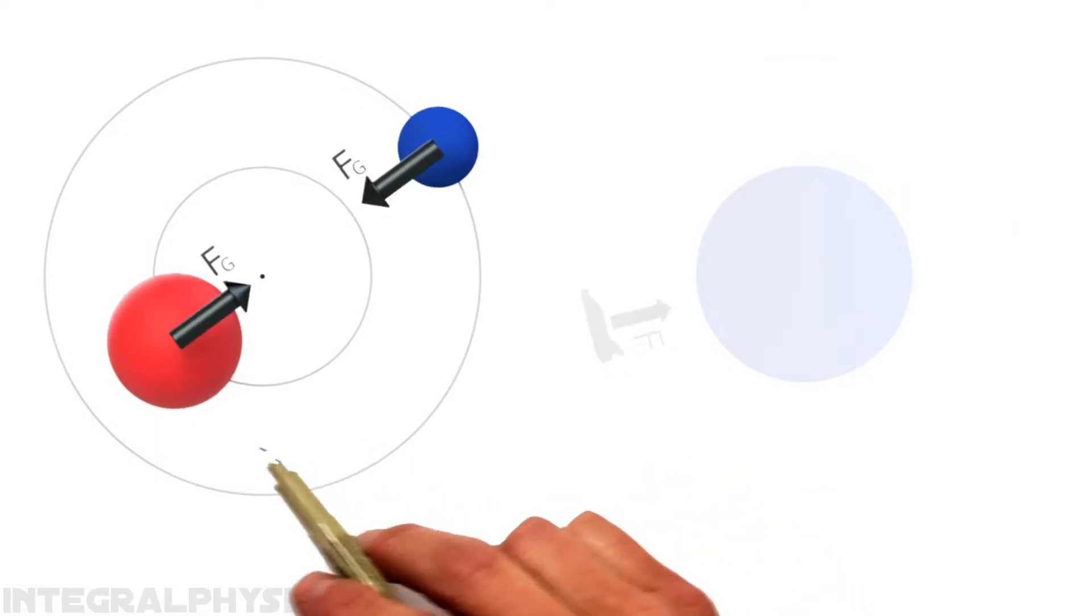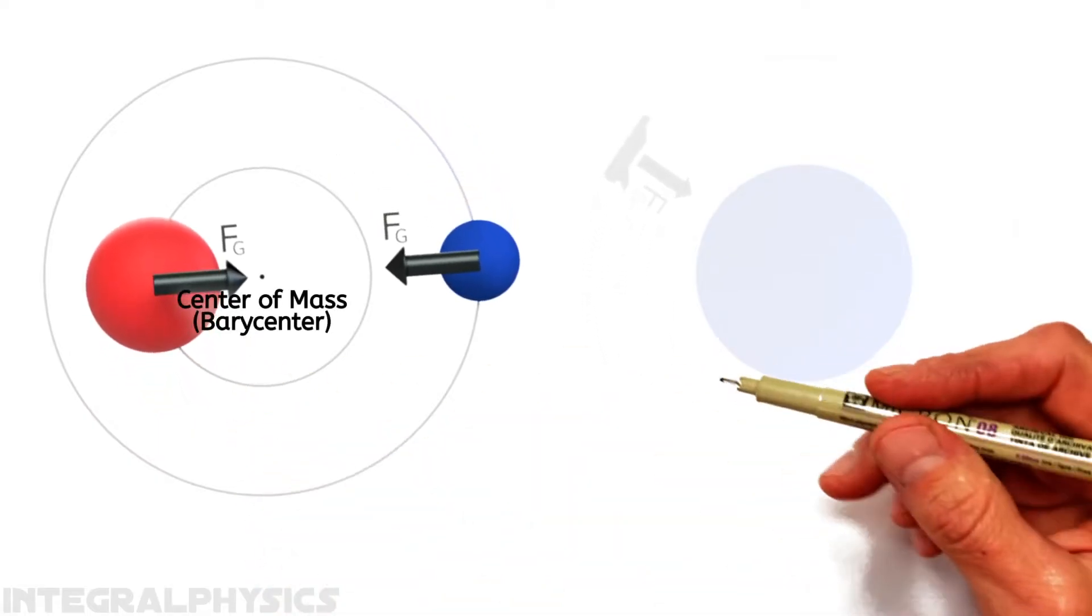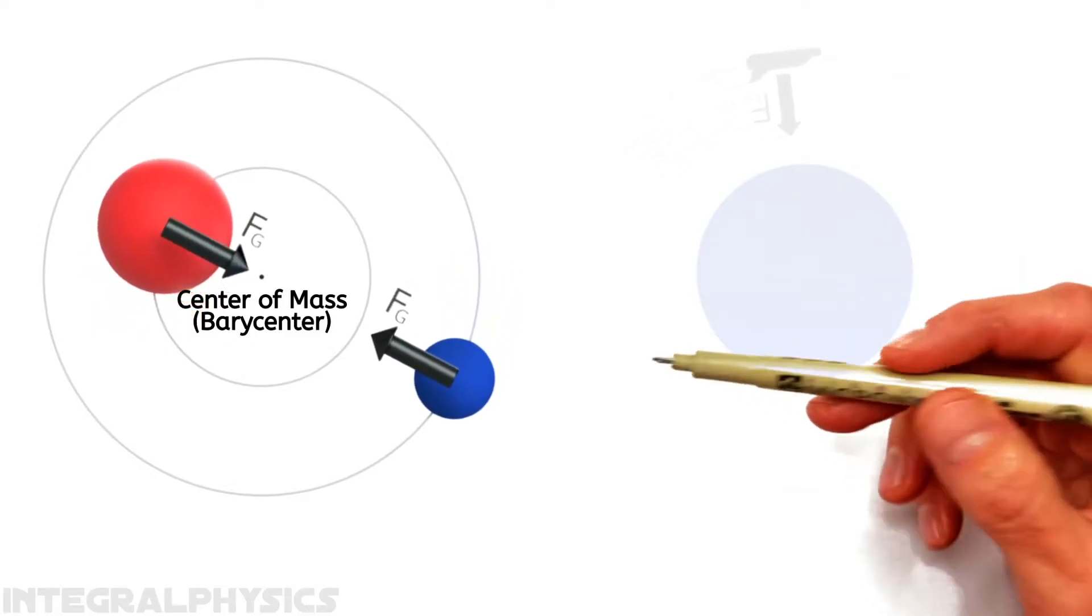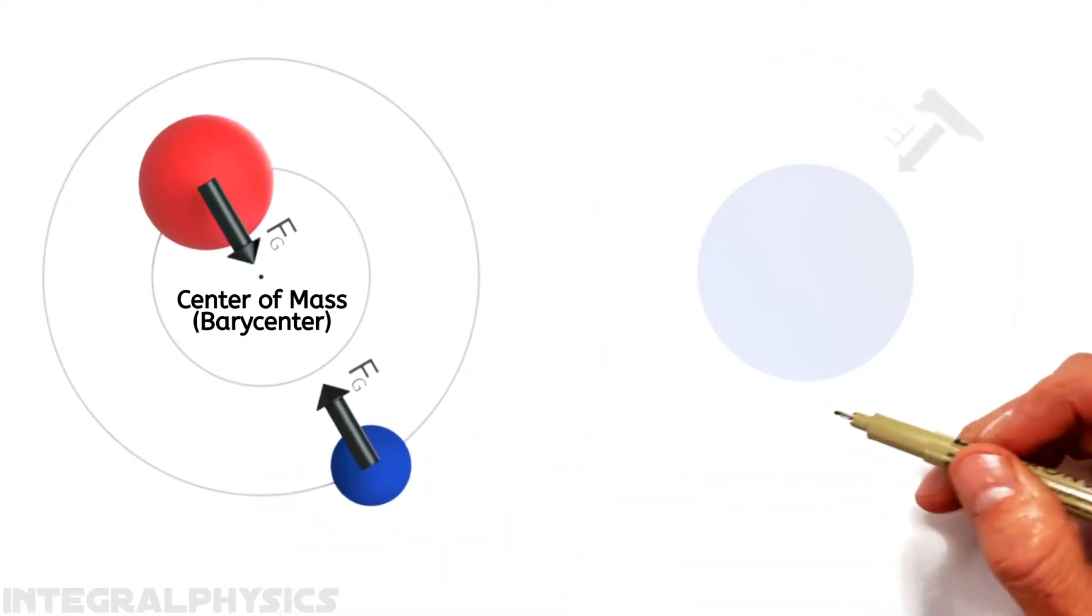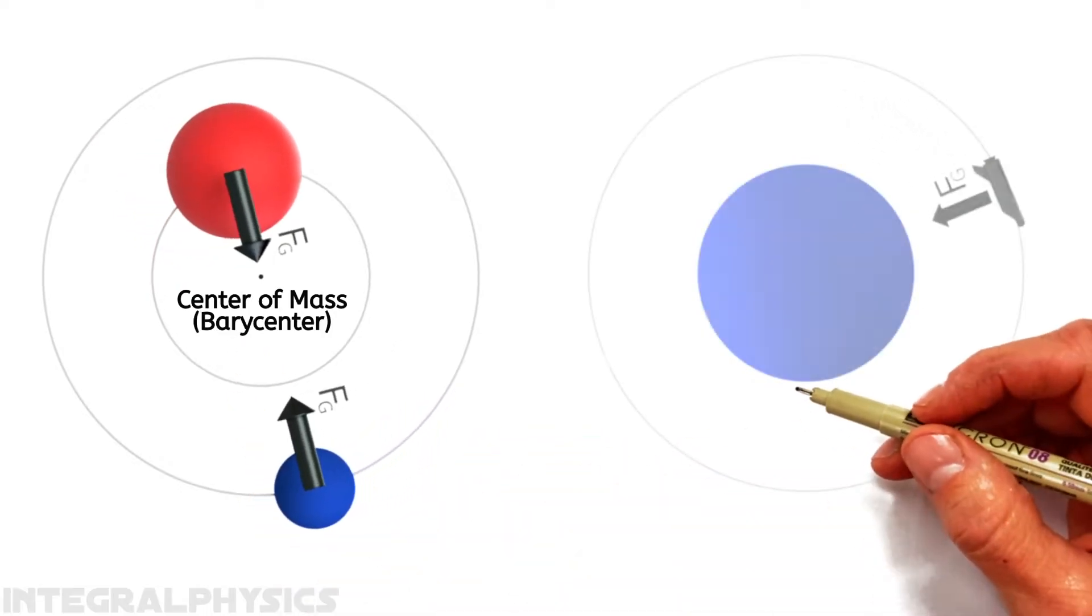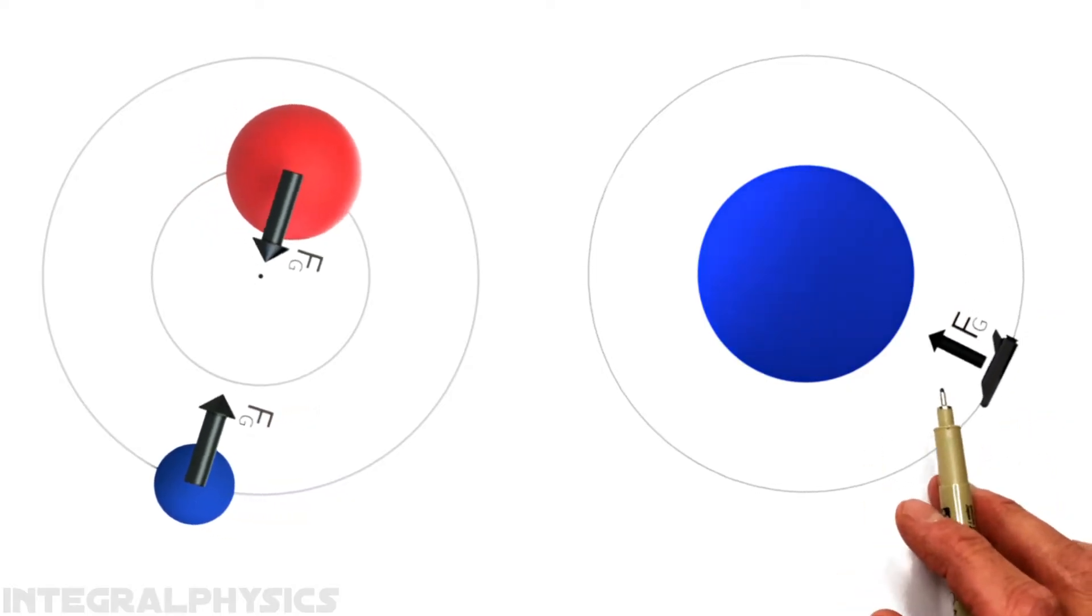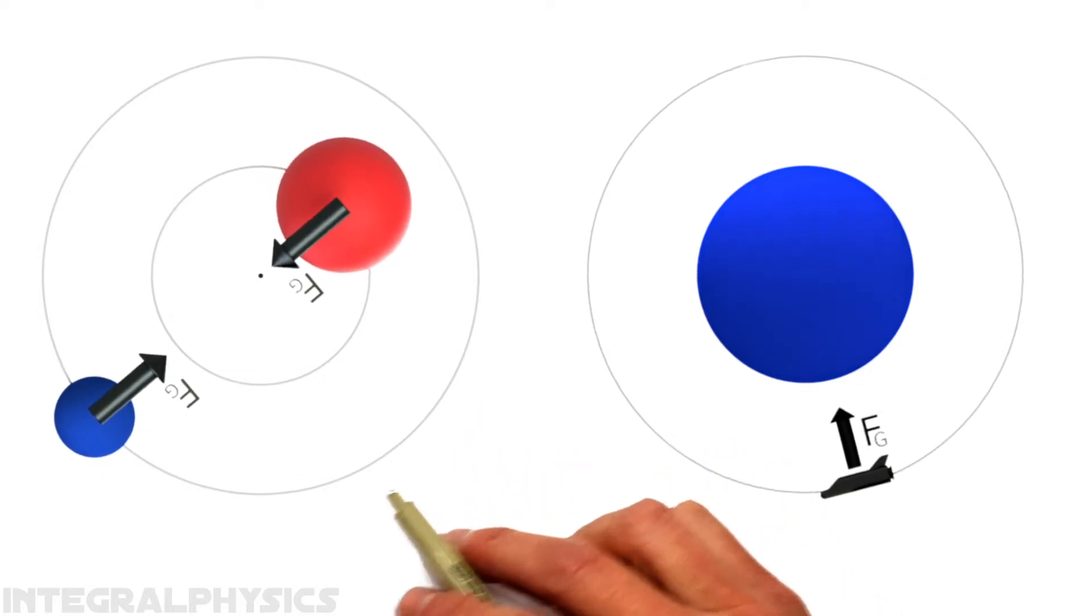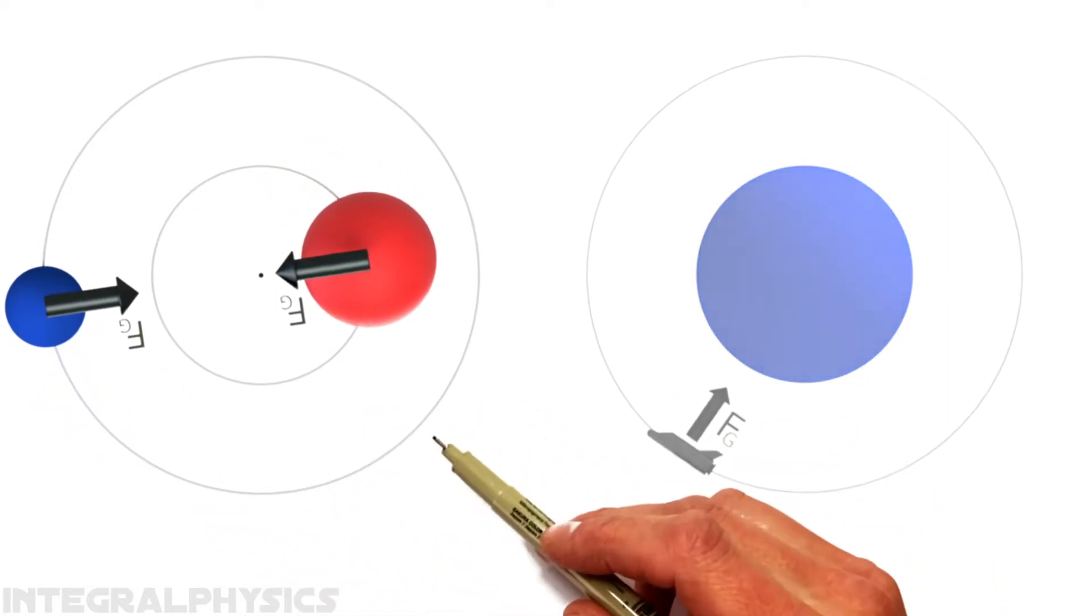In a binary system, both objects orbit their combined center of mass, or what we call the barycenter. And the key to binary systems is in understanding why they orbit that point. See, just like in the case of our spaceship orbiting a planet, the force of gravity is acting as the centripetal force. The difference being that in a binary system, we have to consider the centripetal force on both of these objects.